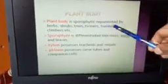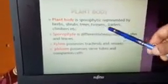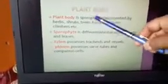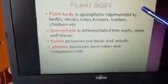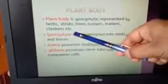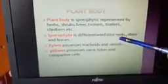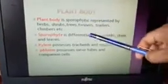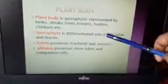Plant body is sporophytic, represented by herbs, shrubs, and trees. The plant body has true roots, stem, and leaves differentiated.